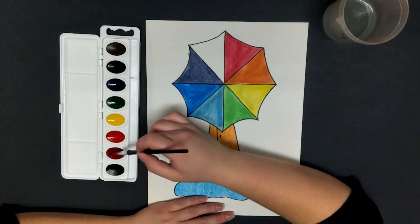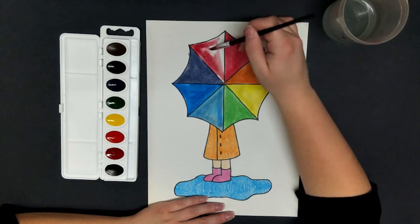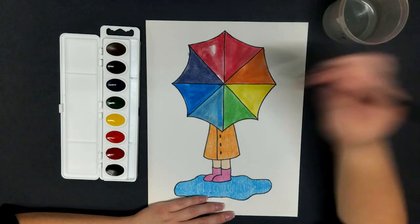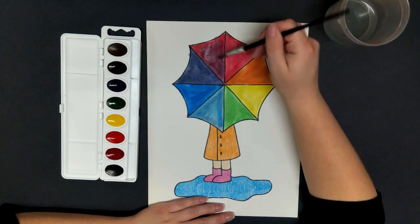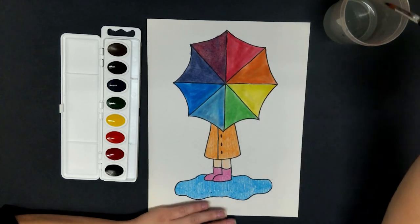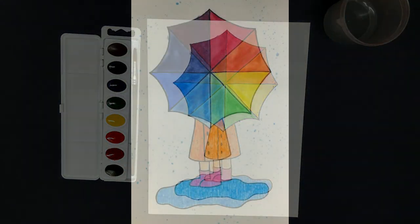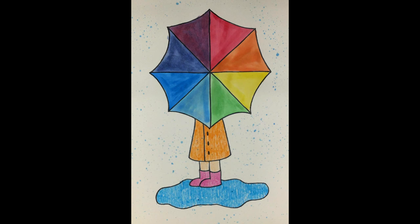Now I'm going to show you how you can mix watercolors right on your paper. Quickly apply your first color. In this case, it is red. And then again, quickly apply your second color. In this case, purple for a red-purple color. I can't wait to see how yours turned out.